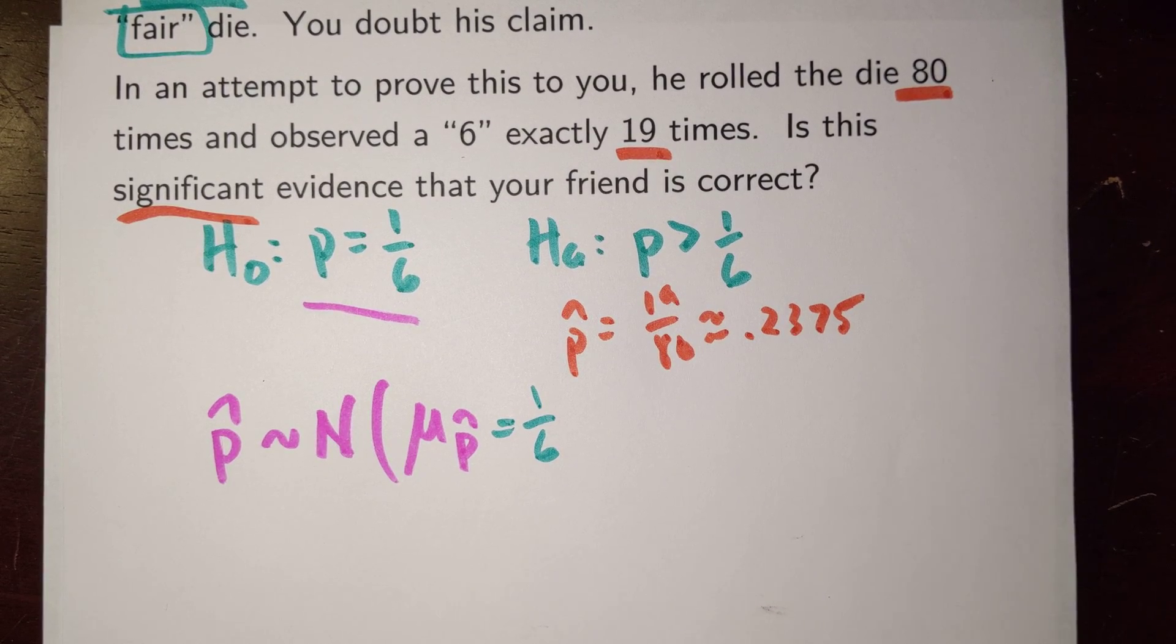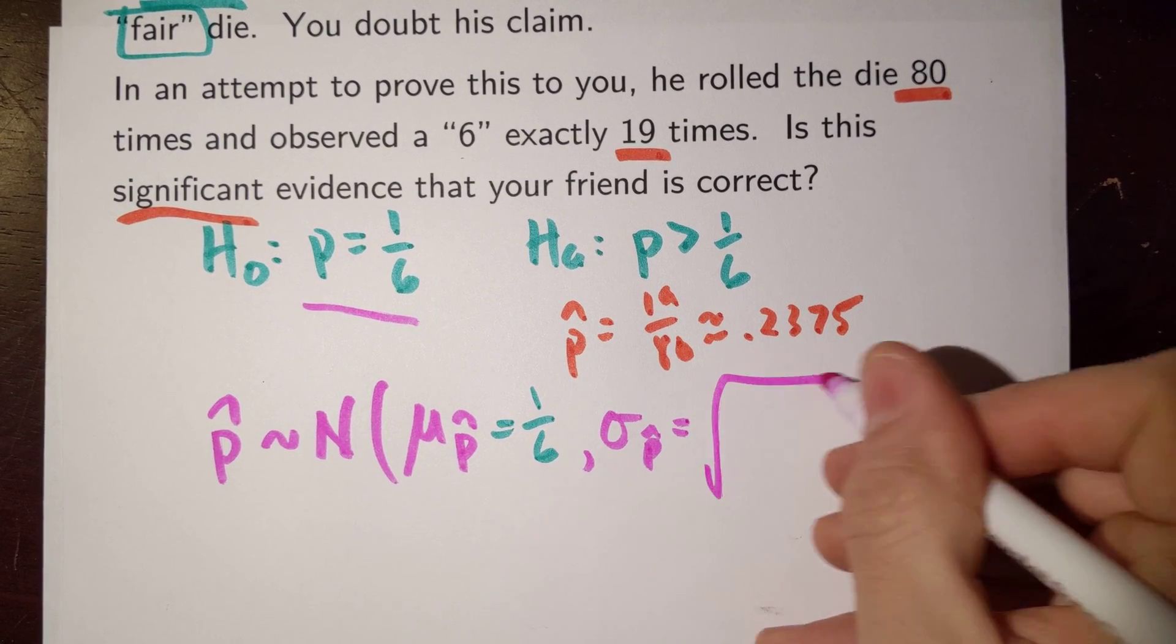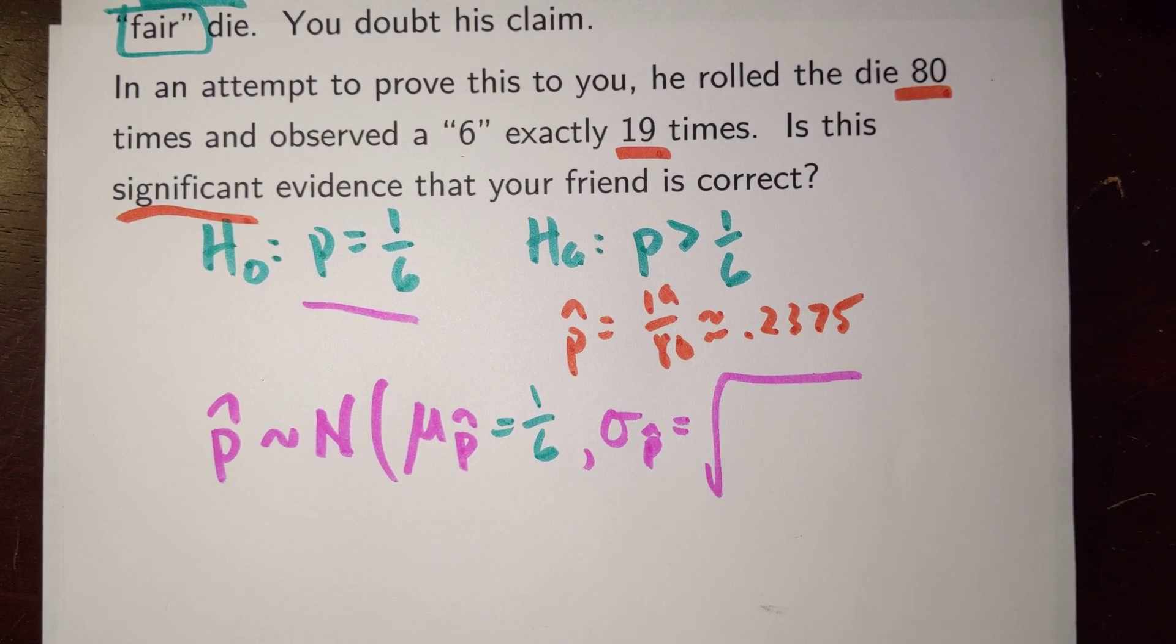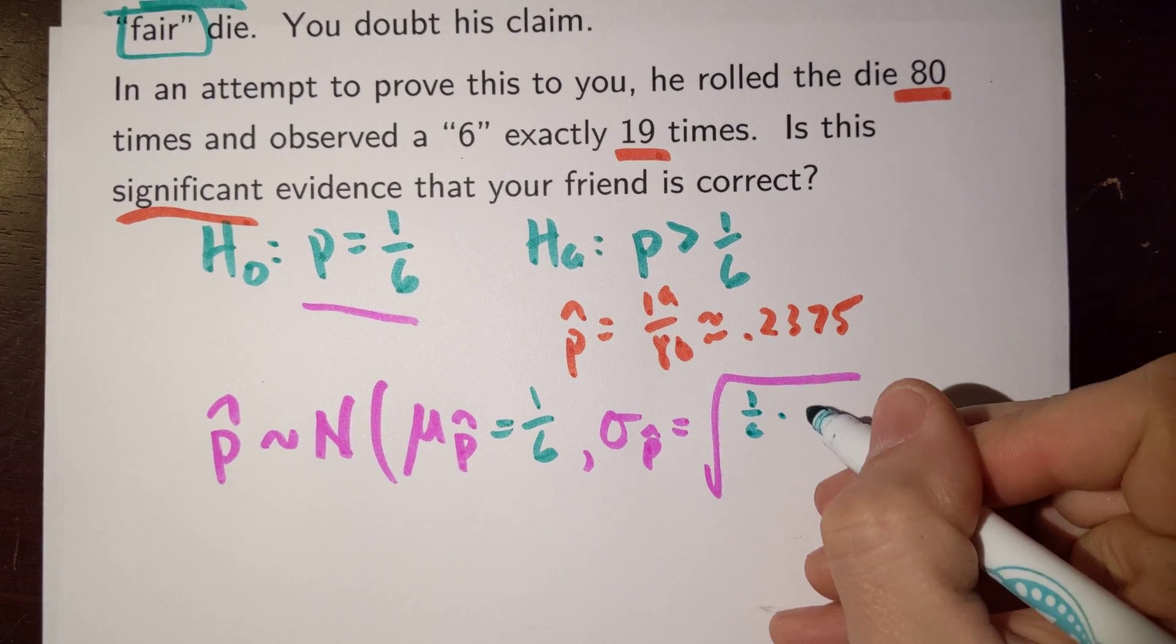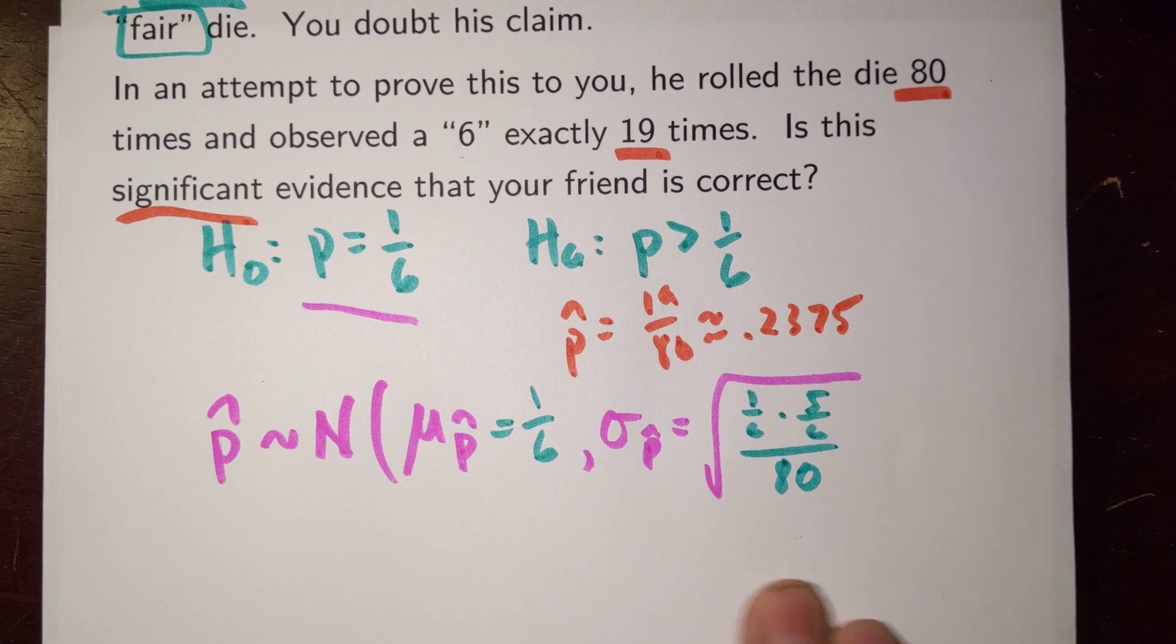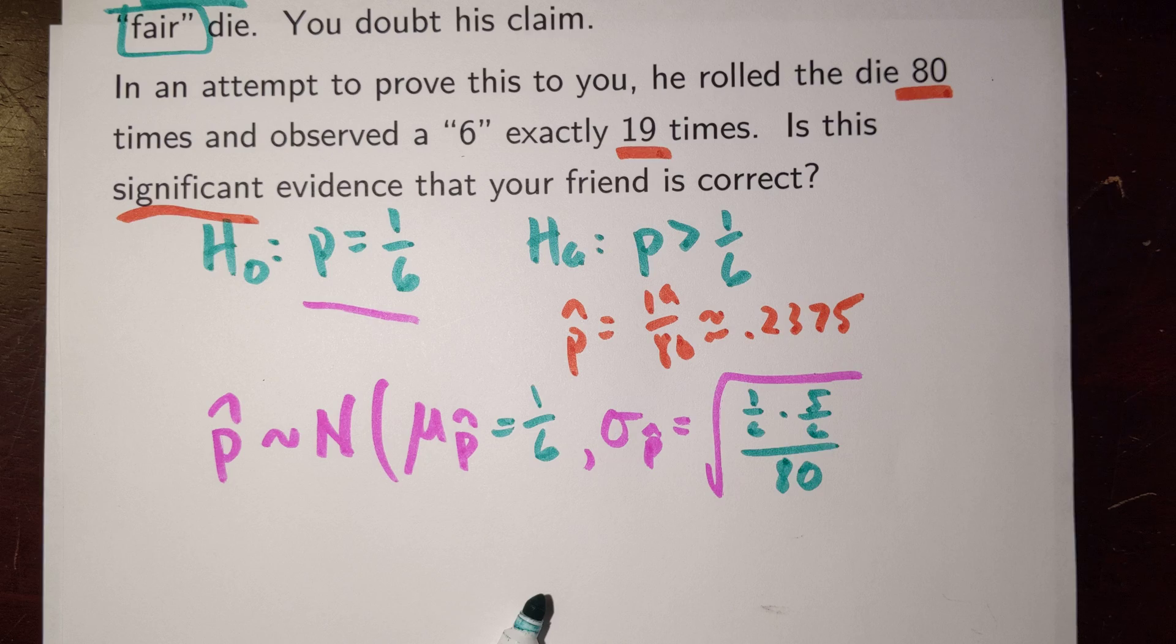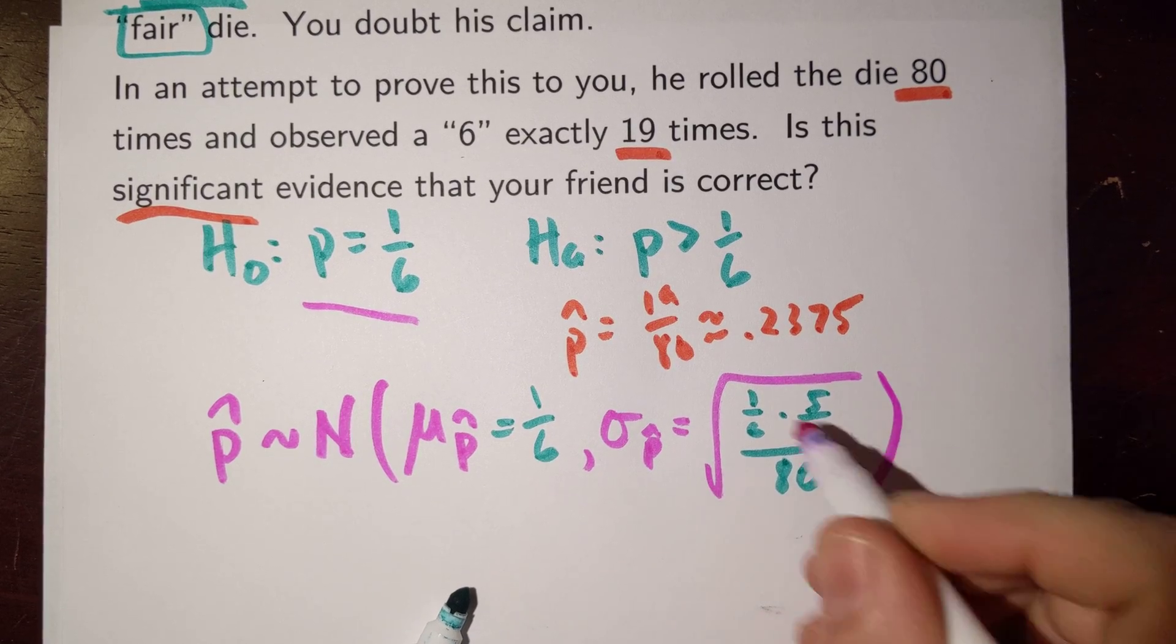And the standard deviation of this distribution, remember it had a big fancy calculation that we proved based on the binomial. It was 1/6 times 5/6 divided by our sample size, which was 80. And this would give us some context in which to think about this particular event.